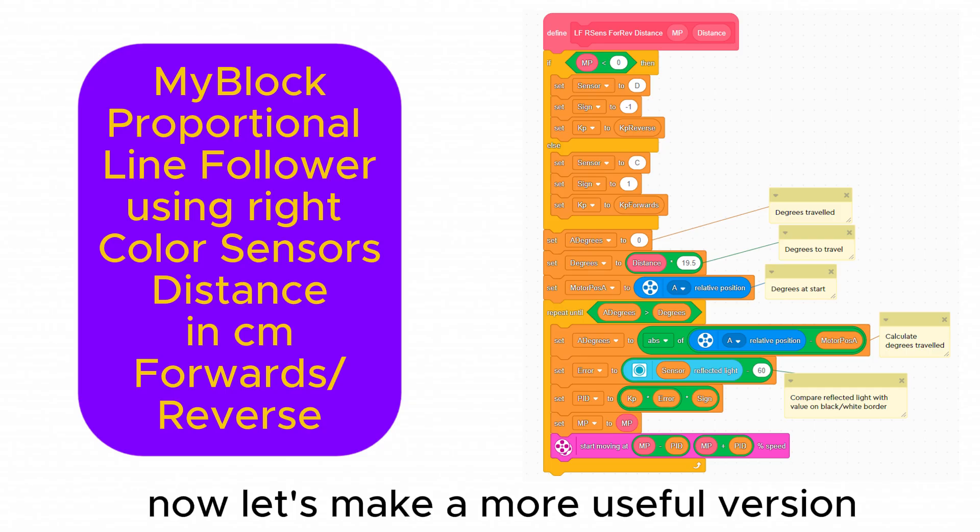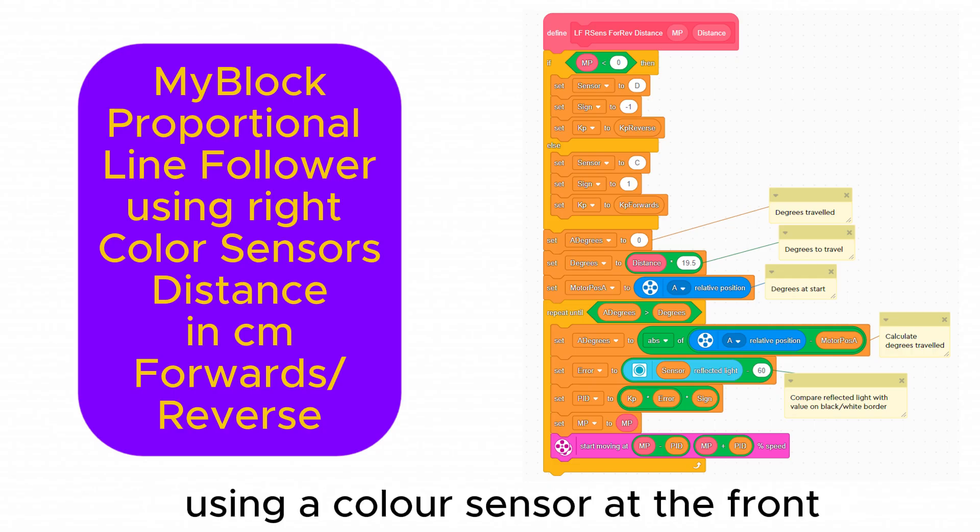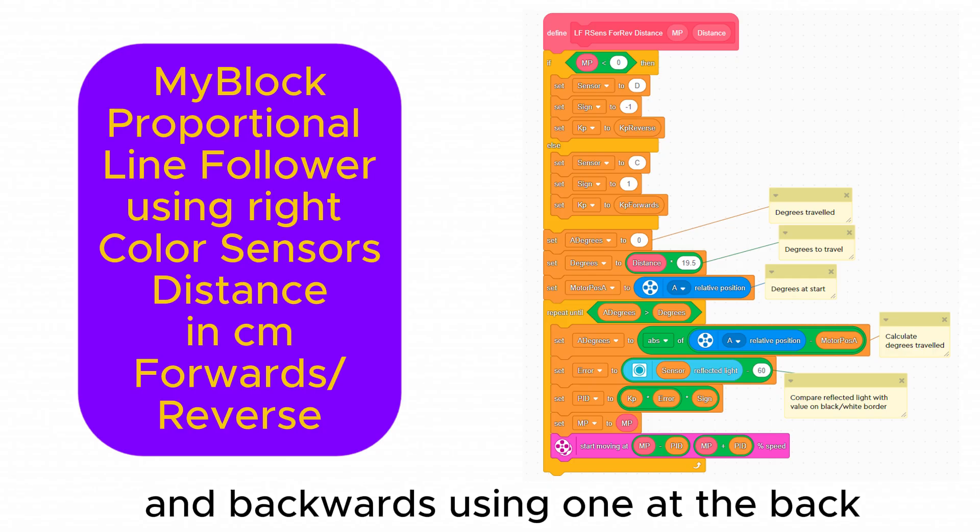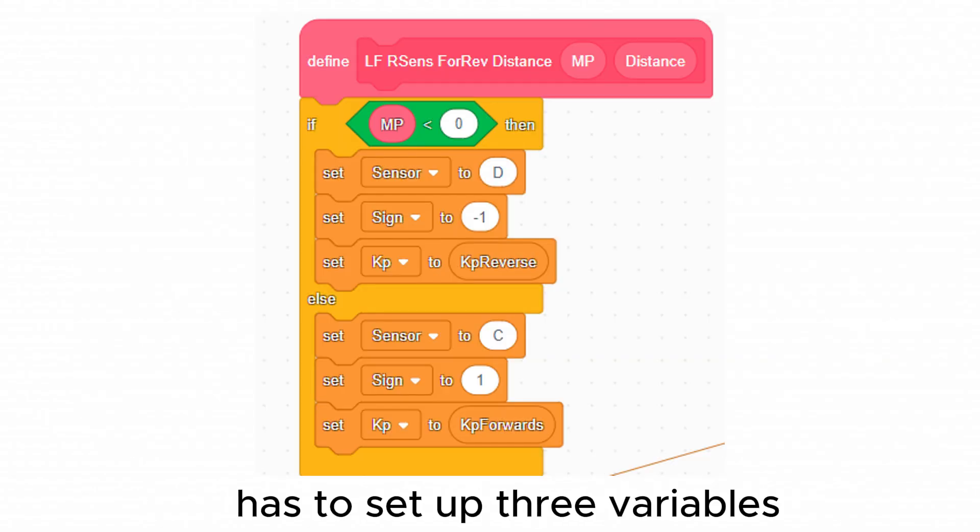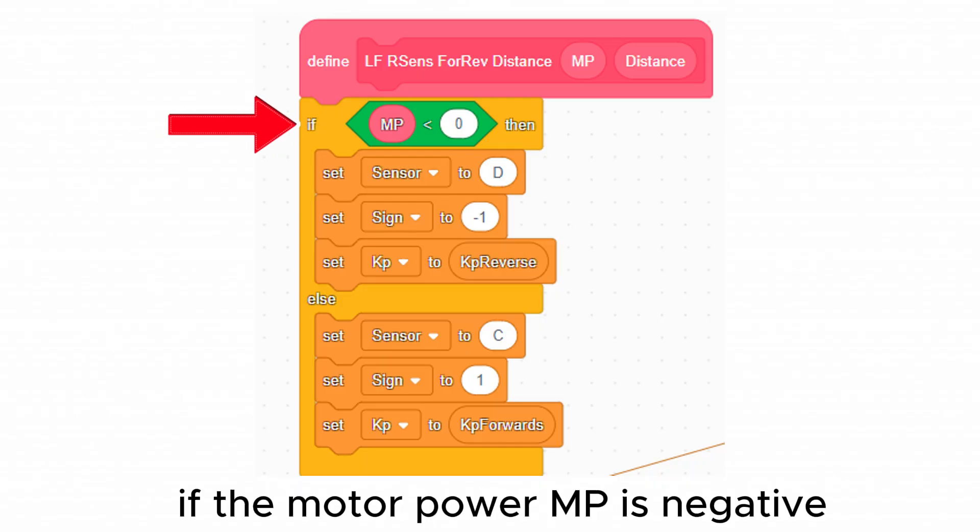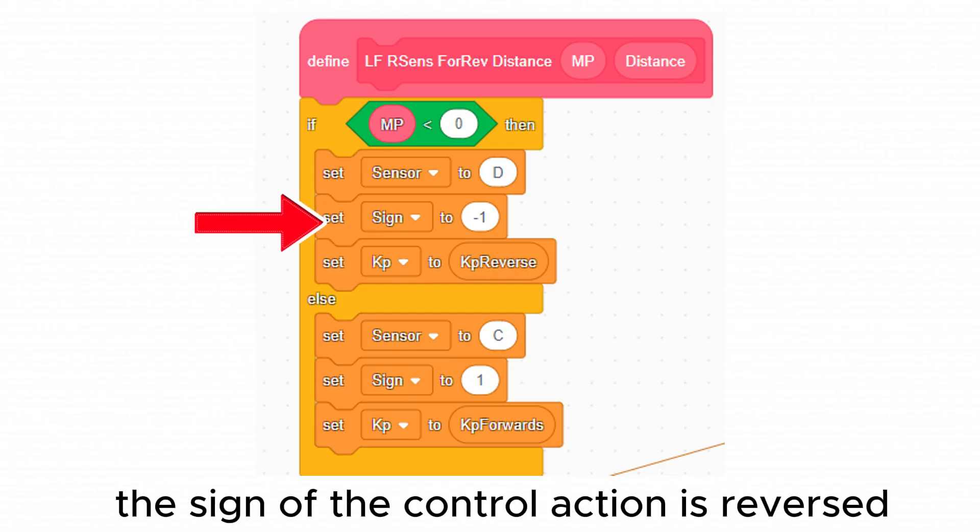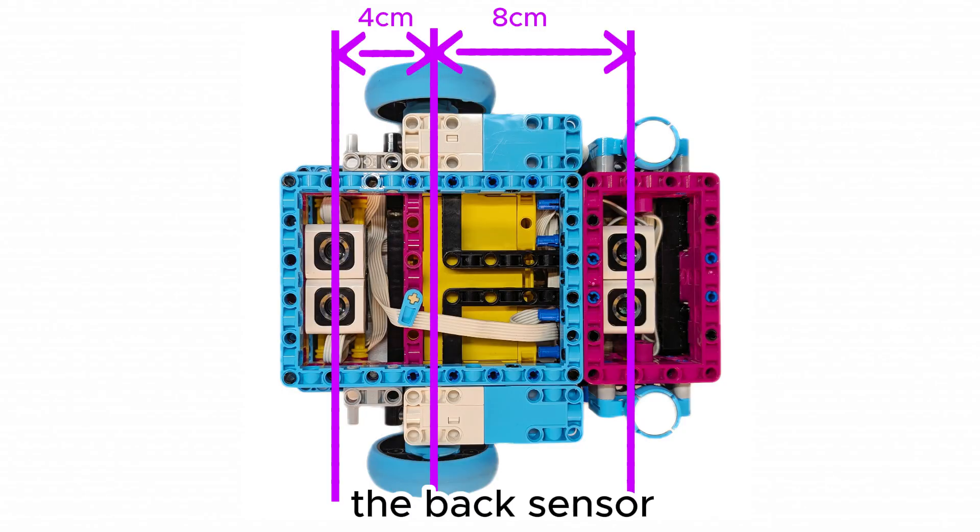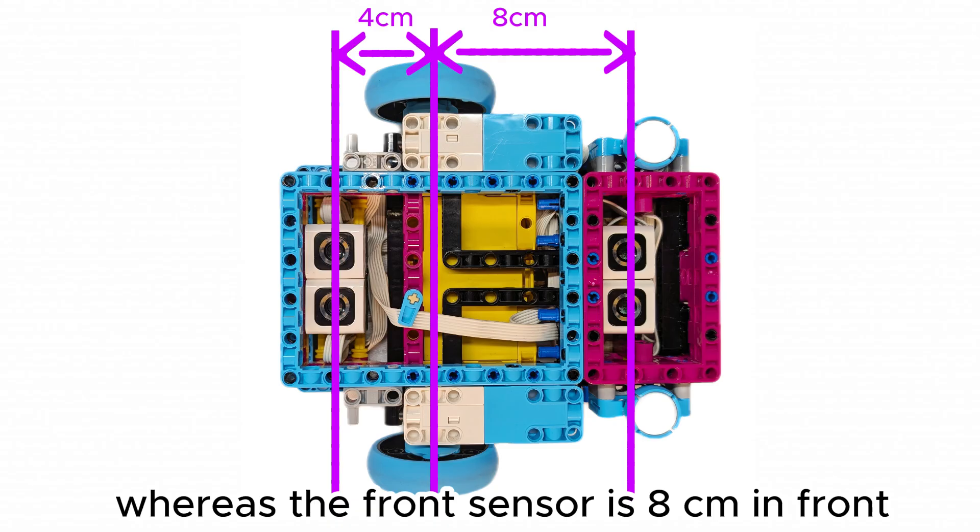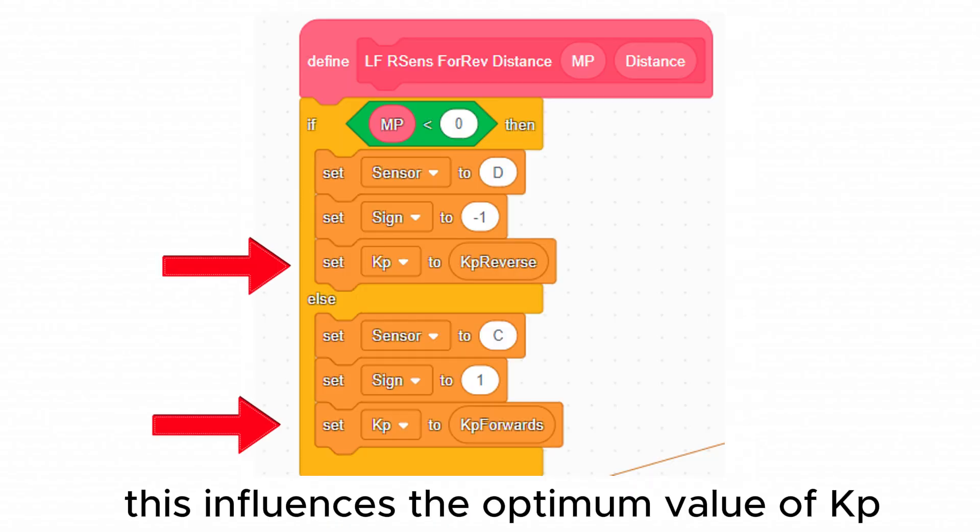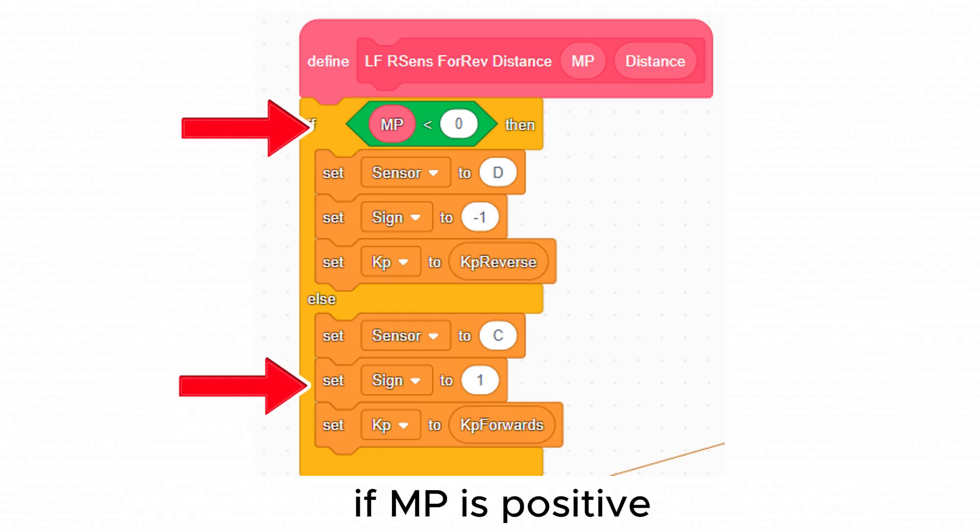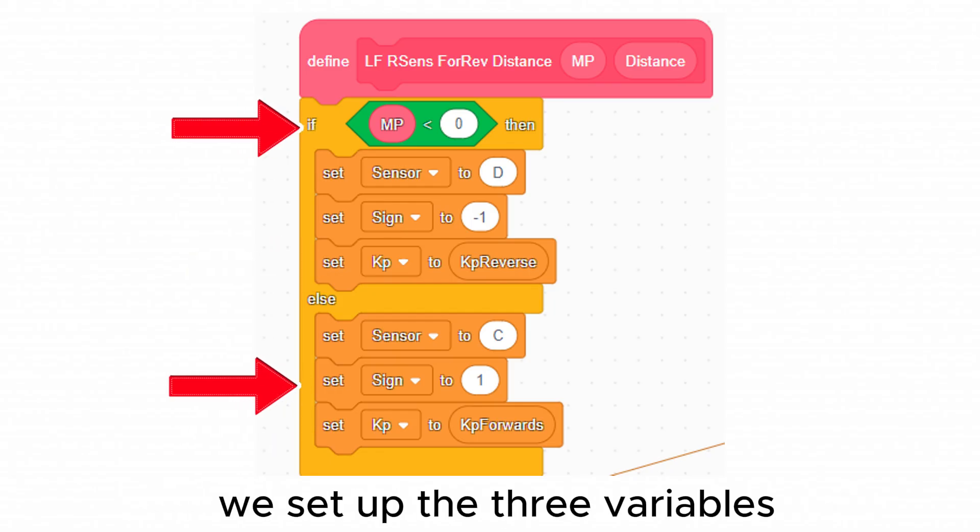Now let's make a more useful version which moves forwards using a color sensor at the front and backwards using one at the back. The first part has to set up three variables which are different for forwards and reverse. If the motor power MP is negative we move backwards. Sensor D on the right at the back is selected. The sign of the control action is reversed and KP reverse is selected. The back sensor is four centimeters behind the wheels whereas the front sensor is eight centimeters in front. This influences the optimum value of KP. If MP is positive we set up the three variables to move forwards.